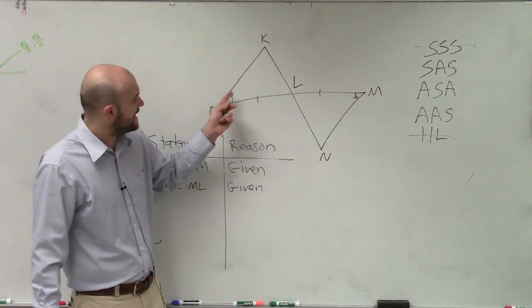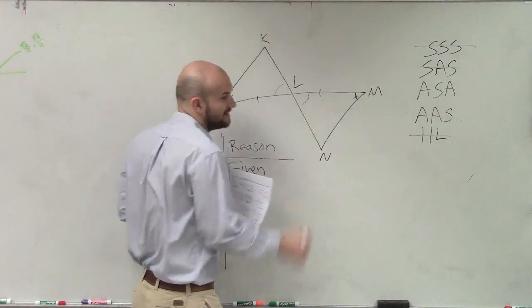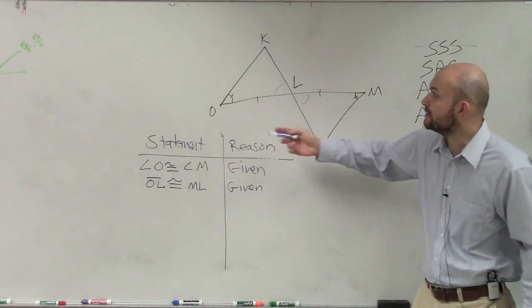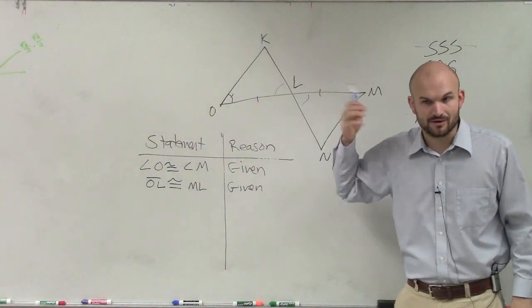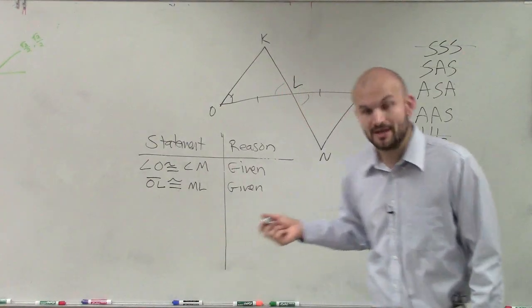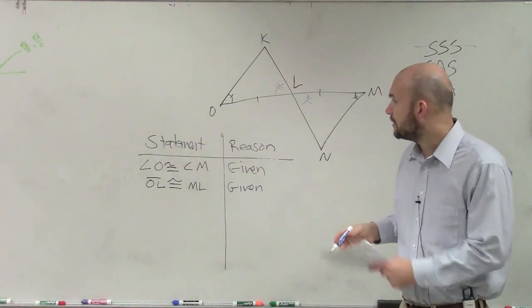So the only thing we can think about is angle, side, angle. Meaning we have to show that these two angles are congruent. If we can show that those two angles are congruent, we have angle, side, angle. So Blake, what Asia said is, well, those are vertical angles. And we know that vertical angles are congruent.